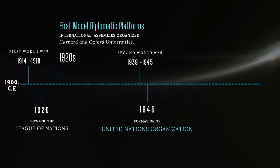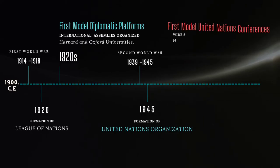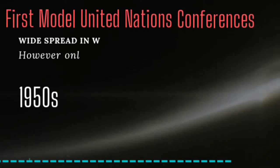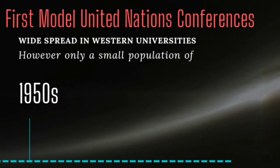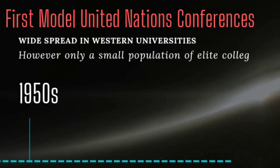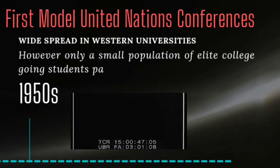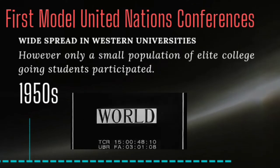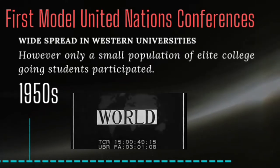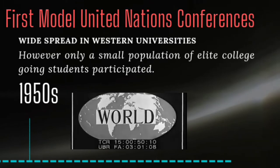As this new global organization emerged and expanded, the concept of model diplomatic conferences re-emerged in western universities and this time they were called Model United Nations conferences. The first model UN conference was organized by Swarthmore College in the US, and the trend continued to spread throughout various universities of the United States, Canada, and Western Europe.